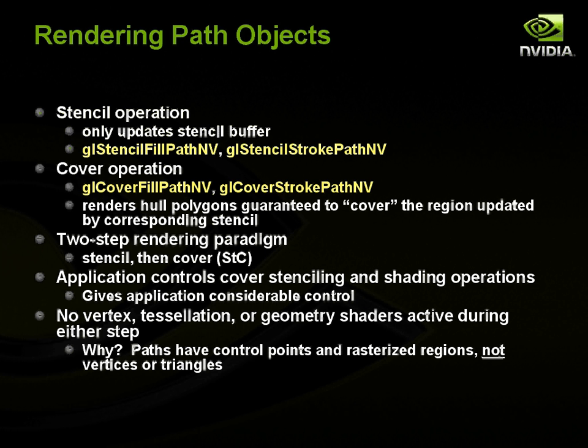In the stencil operation, you're only updating the stencil buffer. There's no updates going on to the depth or the color buffer. The commands you use are GLStencilFillPath for filling and GLStencilStrokePath for stroking. Then, once you've stenciled your path into the stencil buffer, you can go ahead and do a cover operation. You can call GLCoverFillPathNV or GLCoverStrokePathNV, and this renders whole polygons that are guaranteed to conservatively cover the region updated by the corresponding stencil step.